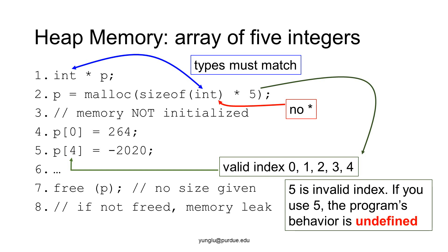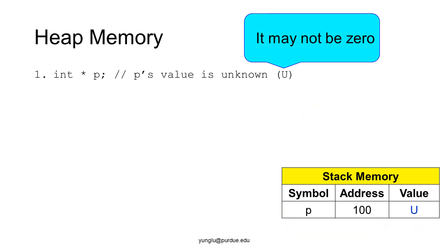If you use five as the index, the program's behavior is undefined. Later on, when the array is no longer needed, use the free function to release the memory. Let's take one step at a time and see how stack and heap memory change.